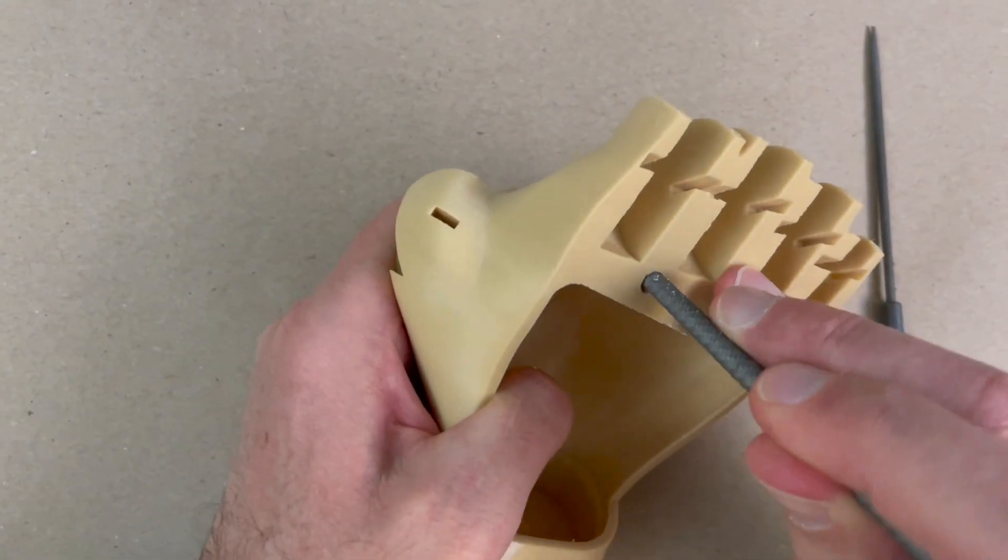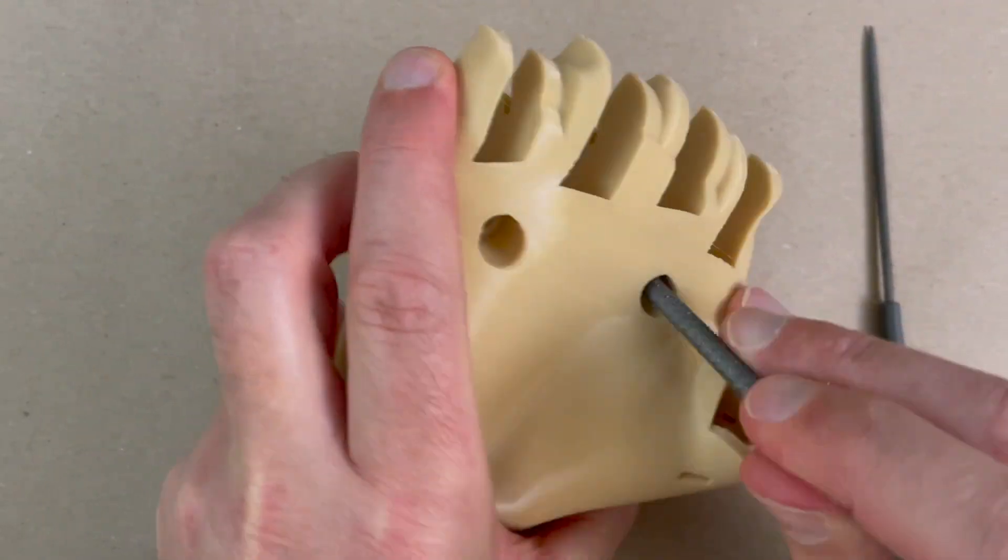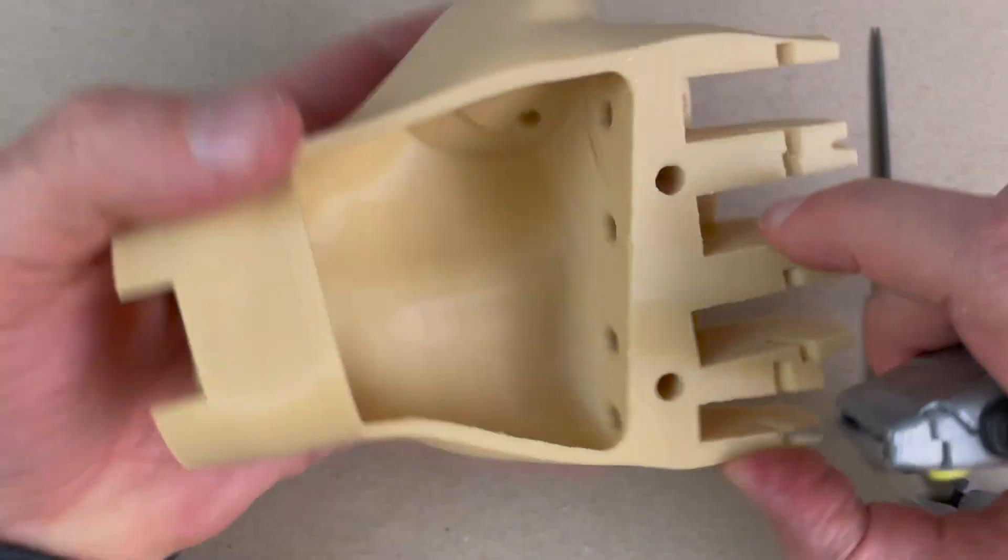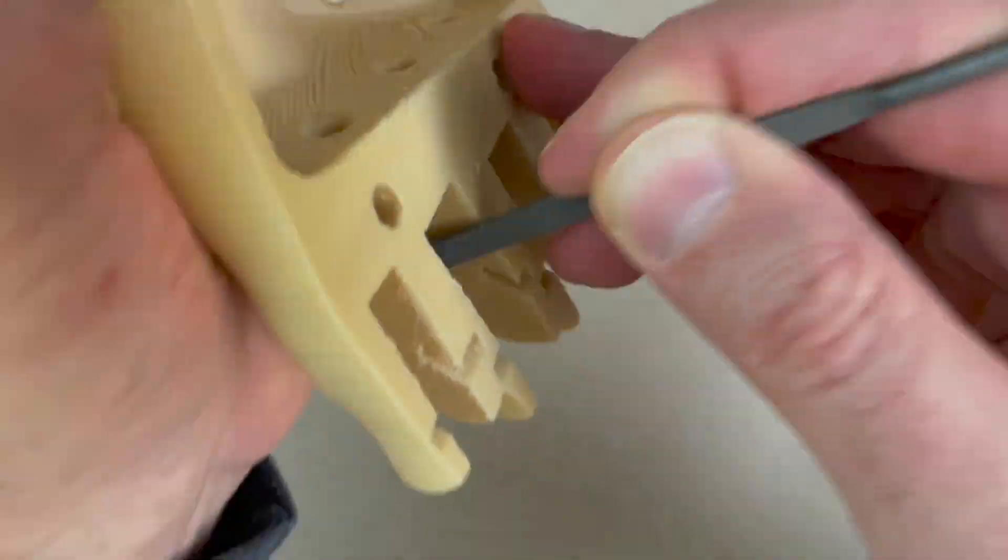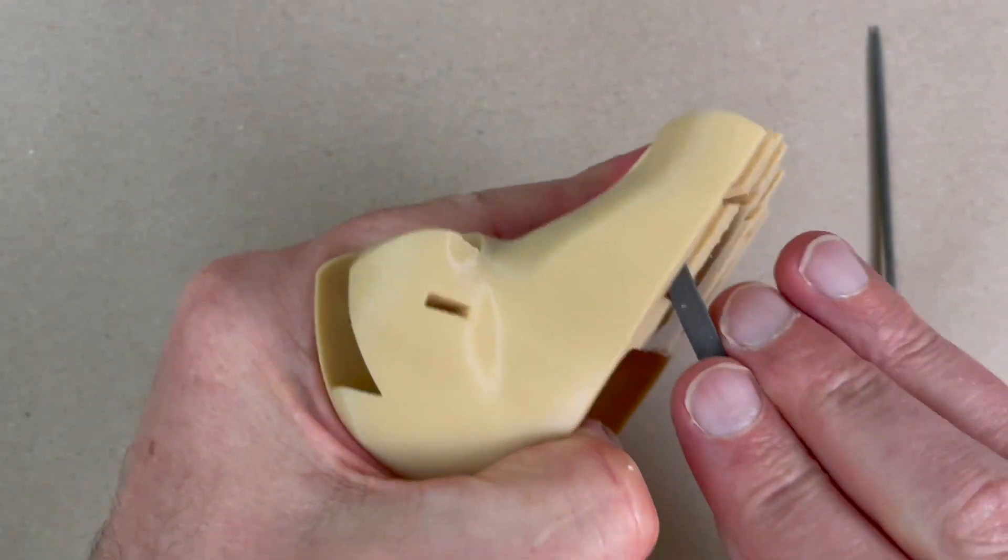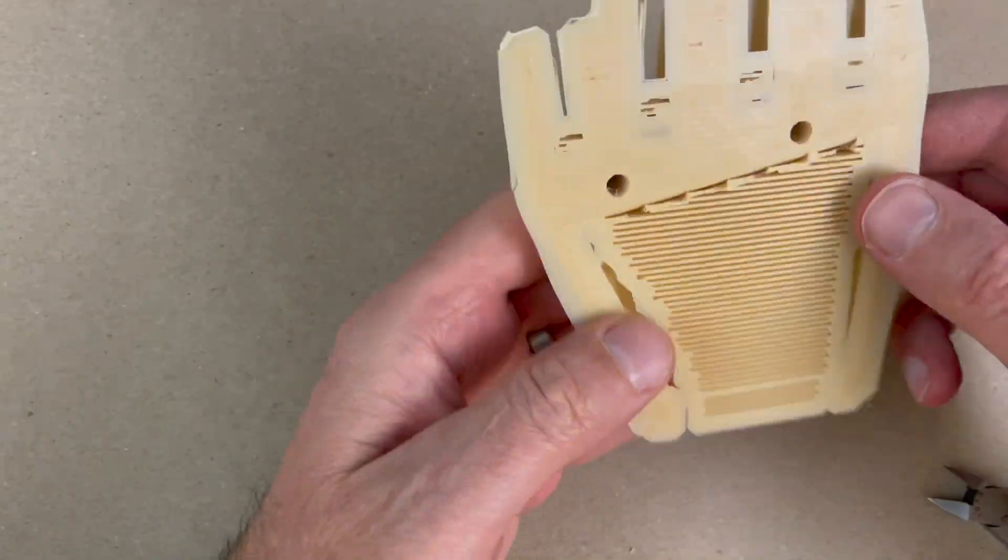So I pull the supports out, clean out all the various holes, particularly if there's drooping in the bridging over these holes. I like to get them all clean, clean all the edges so all my parts slide next to each other really well. I'm going to file the parts and then try them next to each other. Make sure everything moves really clean.